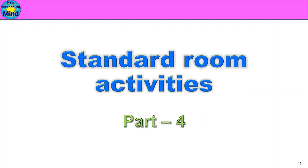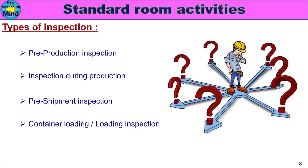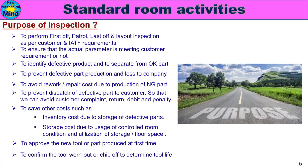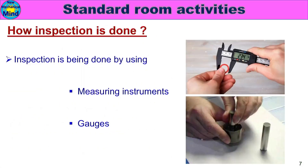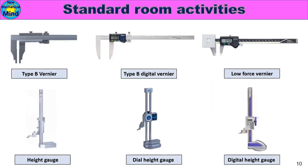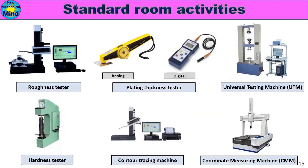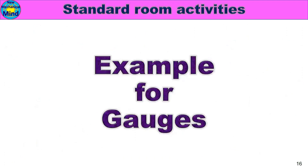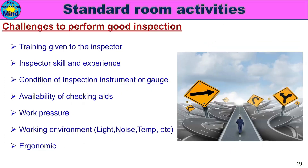In this part, we will see: what is inspection, types of inspection, purpose of inspection, list of inspection items, how inspection is done, example for instruments, example for gauges, and challenges to perform good inspection.